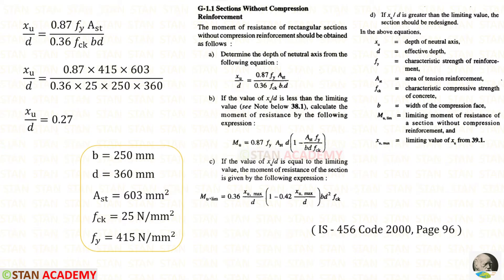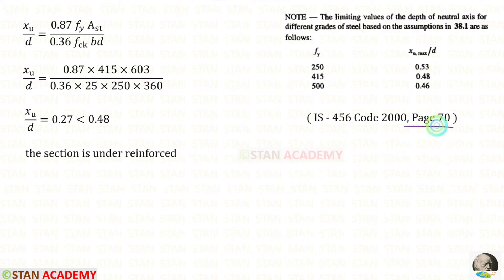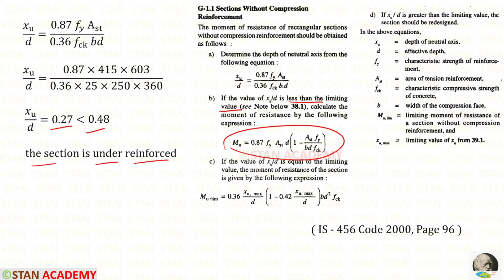Now for the second step: if the value of XU/D is less than the limiting value, we calculate the moment of resistance using the following expression. The limiting value of XU max/D from page 70 is 0.48 for FY = 415. Our value of 0.27 is less than the limiting value, so the section is under-reinforced.